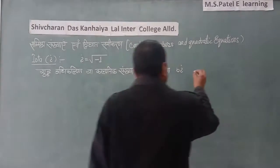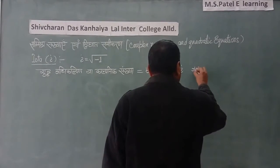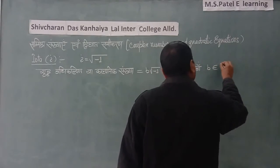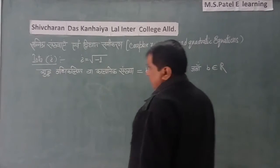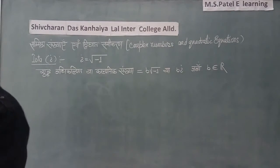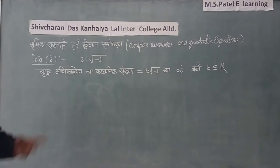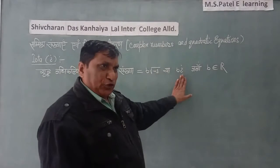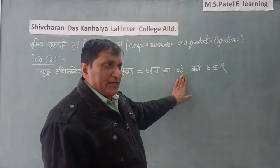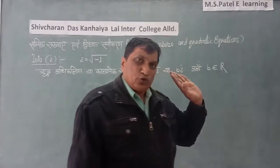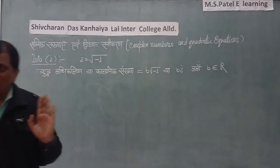Jahaan b belongs to the set of real numbers. So when you take a real number and multiply it by i, you get a kalpunik sankhya — bi.